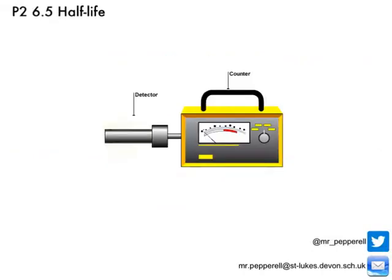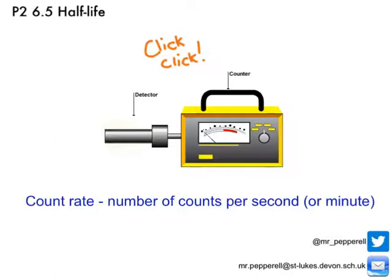Now, if you wanted to monitor this activity, you could use a Geiger counter, which clicks. Each one of those little clicks is actually a radioactive particle being detected. The number of clicks per second or per minute is referred to as the count rate. The count rate tells us the activity of the material — it's the number of counts per second, or sometimes counts per minute.